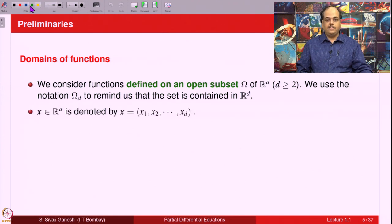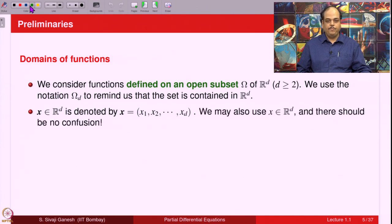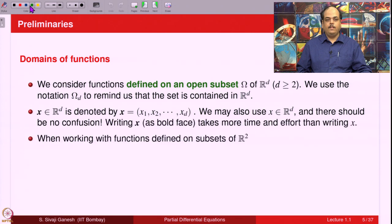An element of R^D, X, is written in boldface. It is not easy for us to write boldface on paper, but in print it is possible. The boldface X actually stands for a D-tuple of real numbers x₁, x₂, ..., x_D. We may also use normal X in R^D and there should be no confusion, because the moment you know you are dealing with functions in R^D and you have a function U of X, it means X is a D-tuple. Writing bold X takes more time and effort than writing a simple X.